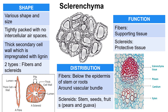Sclerenchyma consists of cells with various shapes and sizes, tightly packed together with no intercellular air spaces. It is the only ground tissue with thick secondary cell walls impregnated with lignin. Sclerenchyma is dead at maturity — when it reaches maturity, it loses its protoplast, forming an empty lumen. There are two types: fibers and sclereids. Fibers are found distributed below the epidermis of stem or roots and serve as supporting tissues. Sclereids are found in stems, seeds, and fruits such as pears and guavas, and serve as protective tissues.